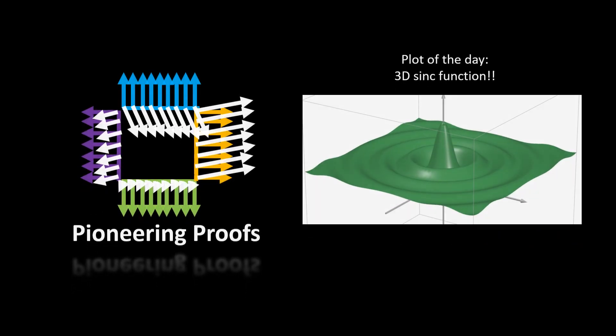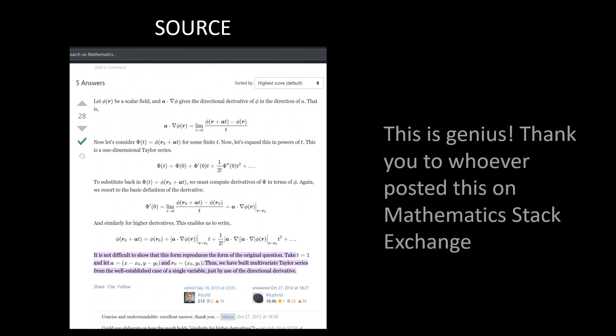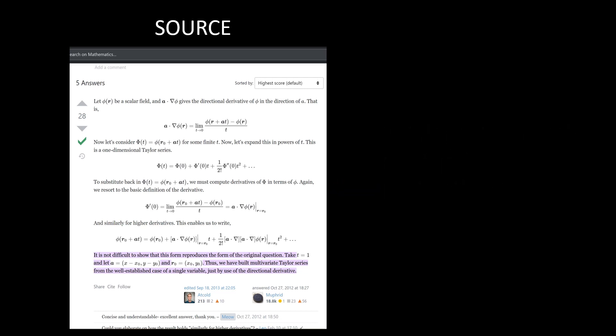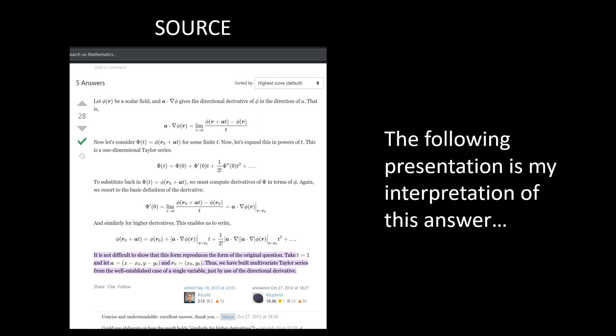Hello and welcome. Today we will be talking about the multivariable Taylor series. The way I figured out how to do this was actually a Mathematics Stack Exchange post, so thank you to whoever did this. My presentation is an interpretation of that post.